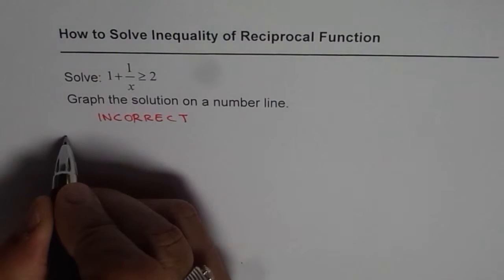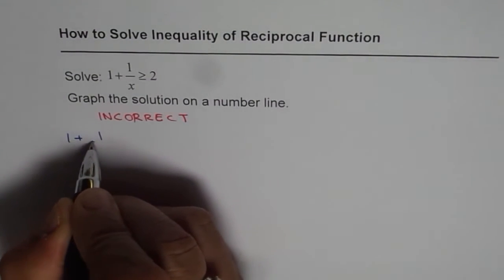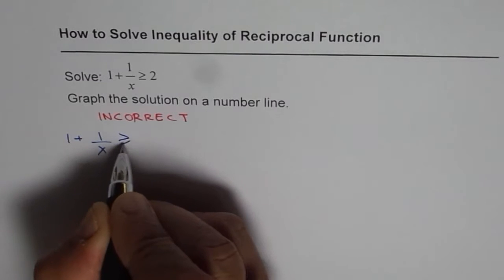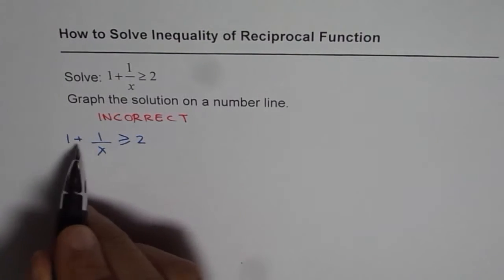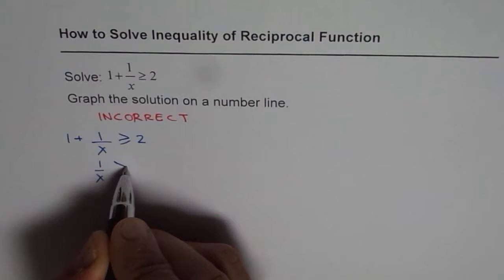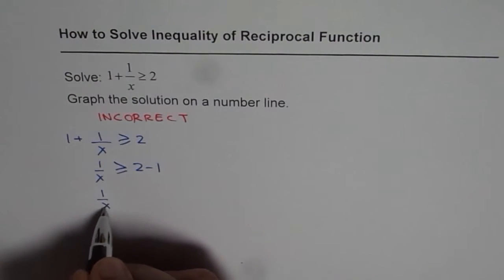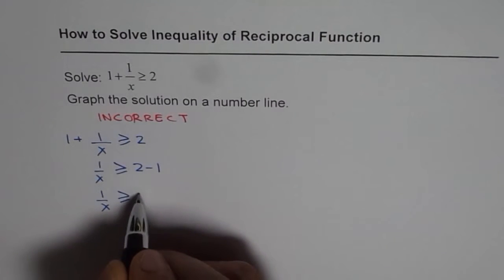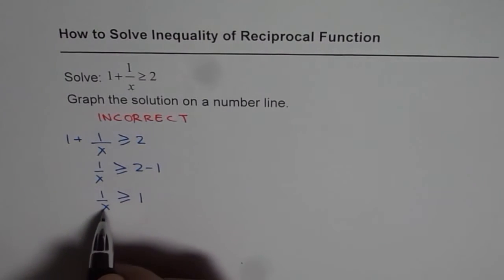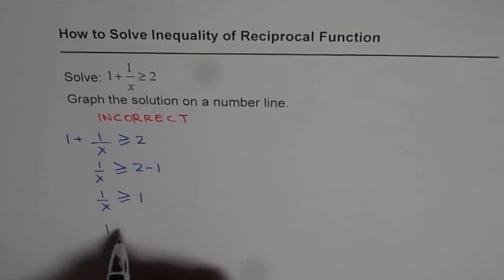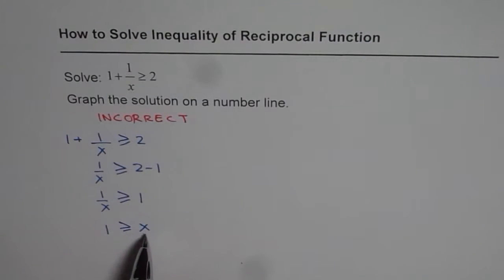We will start with the question which is 1 plus 1 over x greater than or equal to 2. So we can take away 1 from both sides. We get 1 over x is greater than or equal to 2 minus 1 or we say 1 over x is greater than or equal to 1. And now we can multiply by x and so we get 1 is greater than or equal to x.